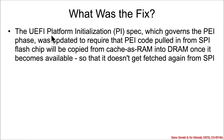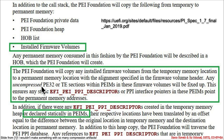What was the fix? The UEFI Platform Initialization, or PI spec, which covers how PEI should work, was updated to require that PI code pulled from the SPI flash be copied into cache-as-RAM and then directly into DRAM once it becomes available. That way it won't get double-fetched. The updated PI spec says that installed firmware volumes are supposed to be copied into permanent memory, so the PEI foundation will copy any installed firmware volumes from the temporary memory location to a permanent memory location.